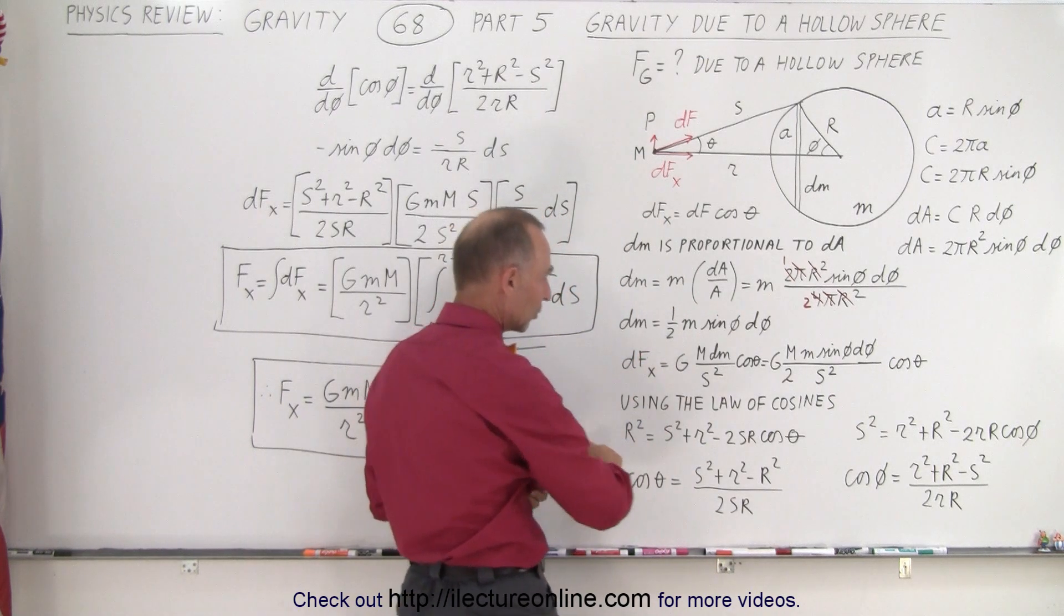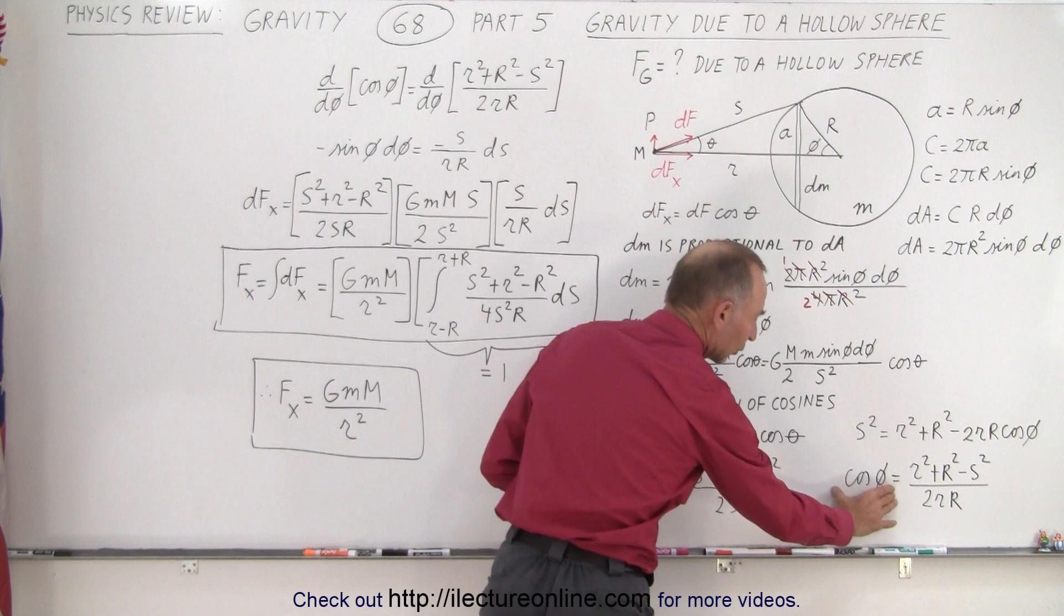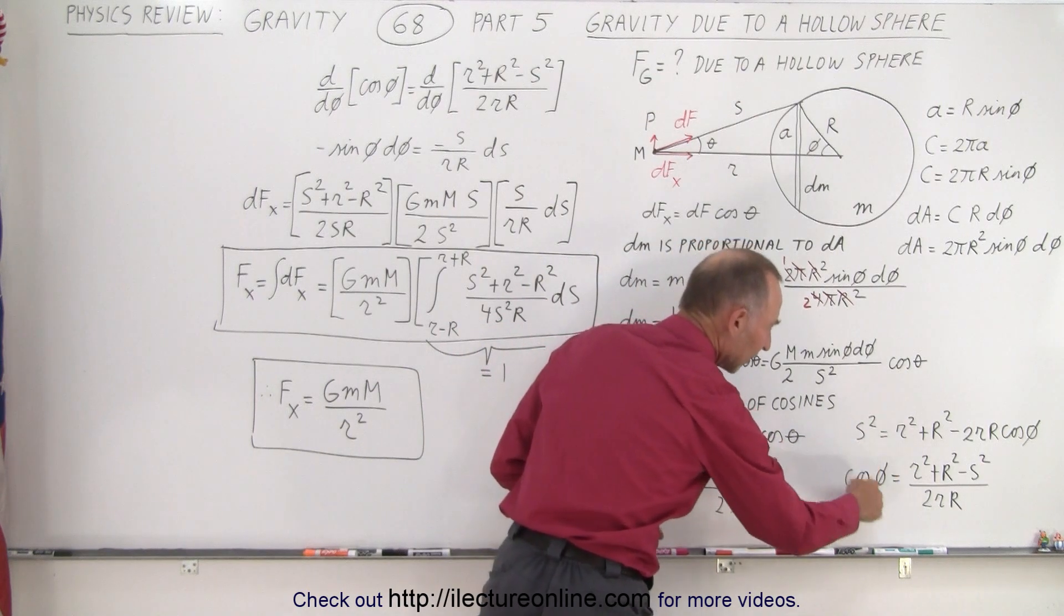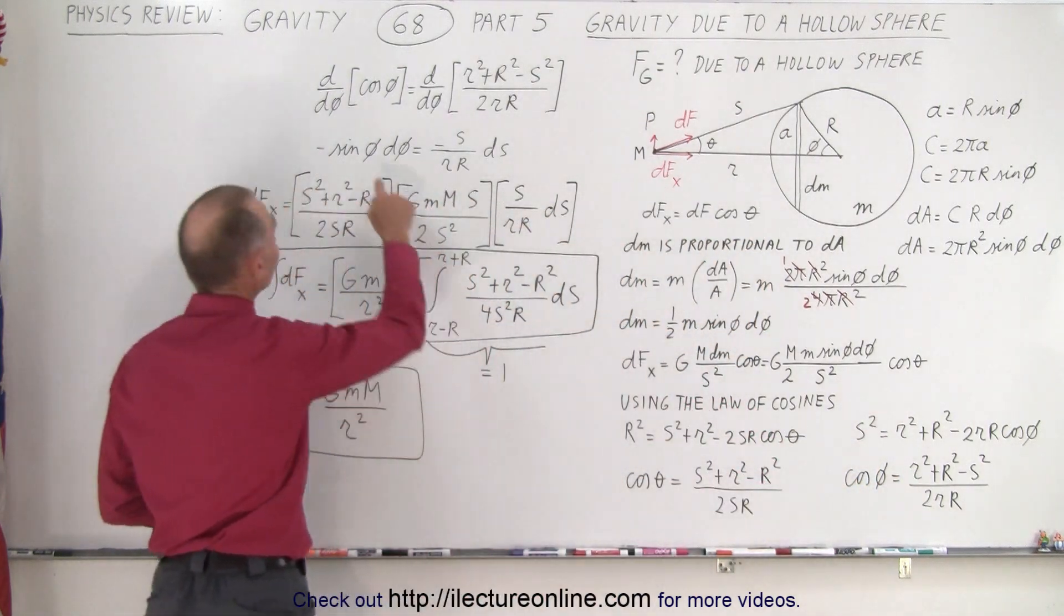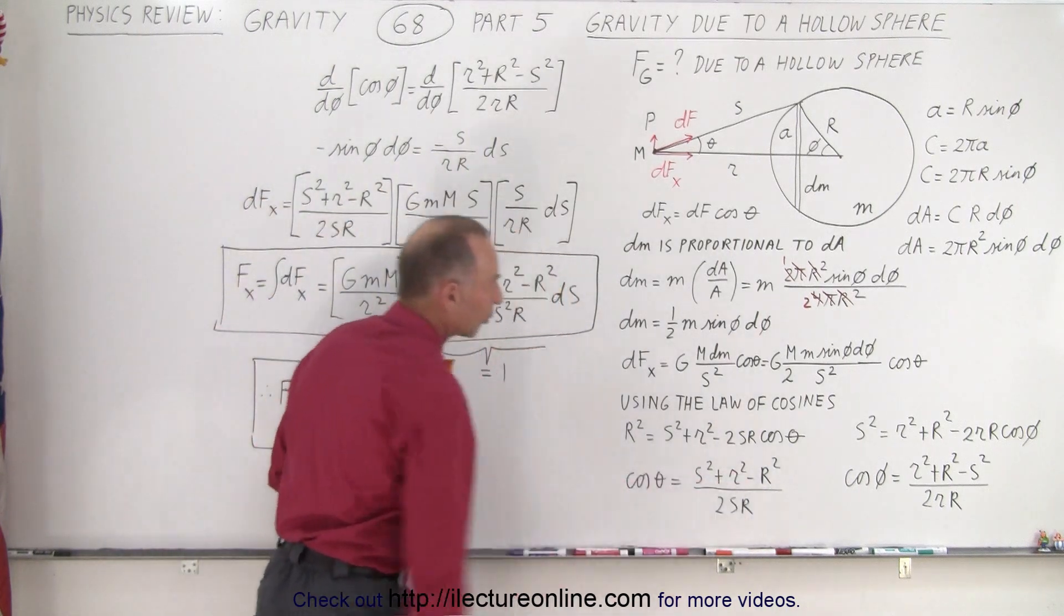And we do that, first of all, by using the law of cosines on the cosine of theta to find the cosine of theta and to find the cosine of phi. And then by taking the derivative of that, we end up getting the sine of phi. Now we have an expression for the sine of phi and expression for the cosine of phi.